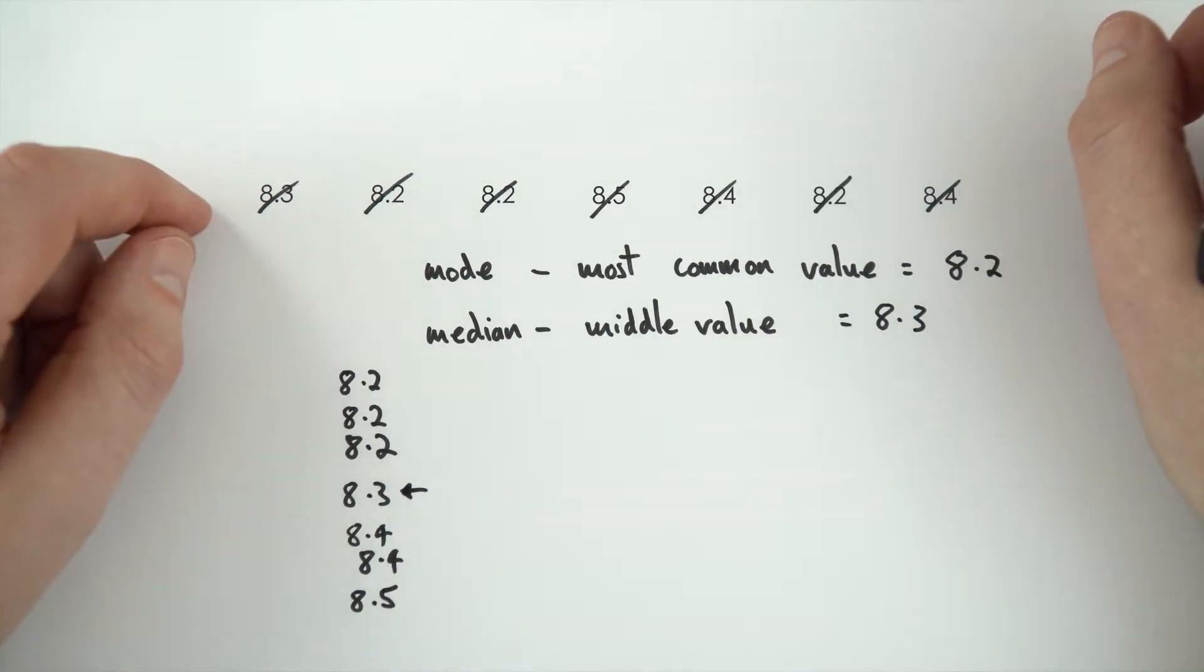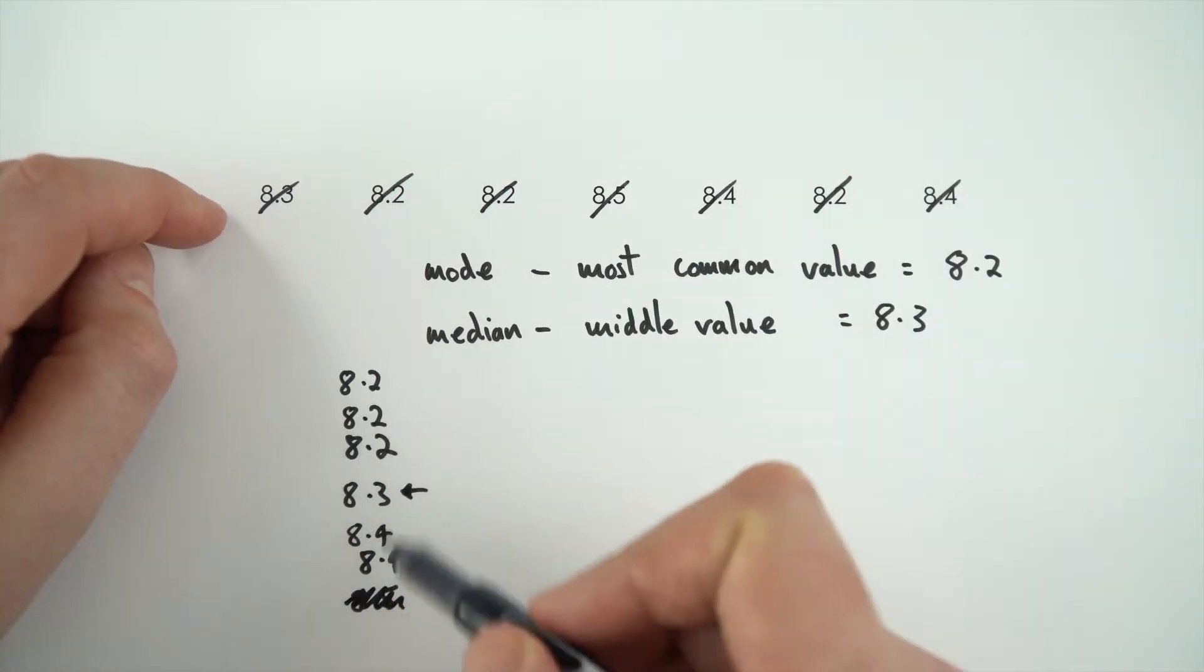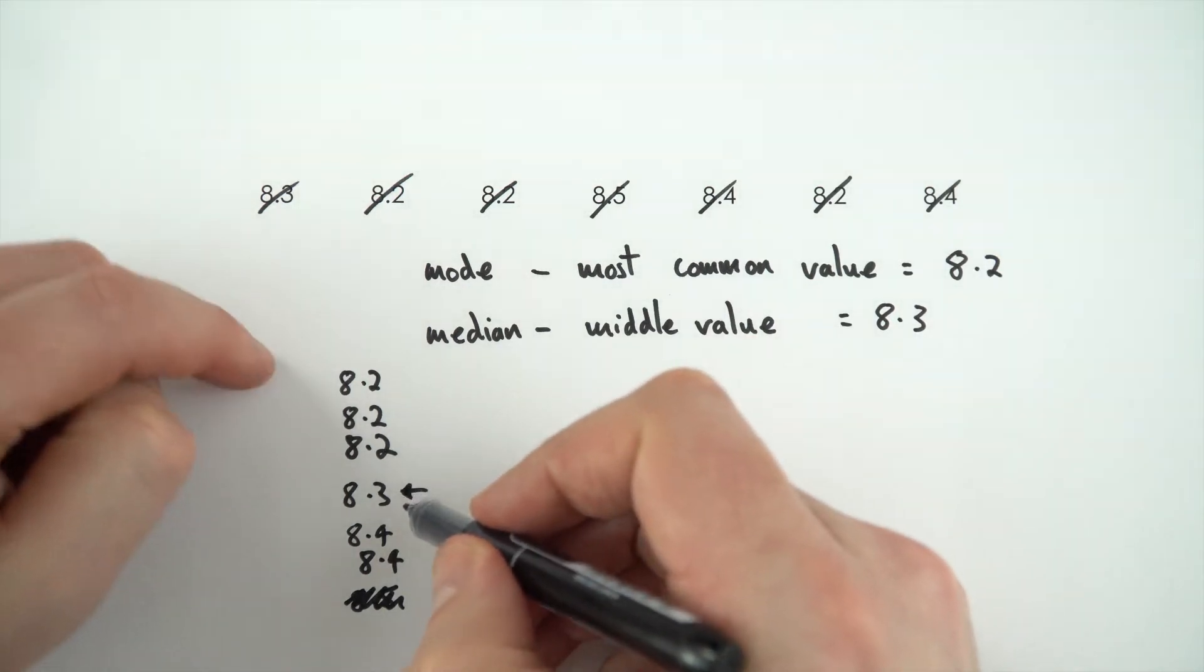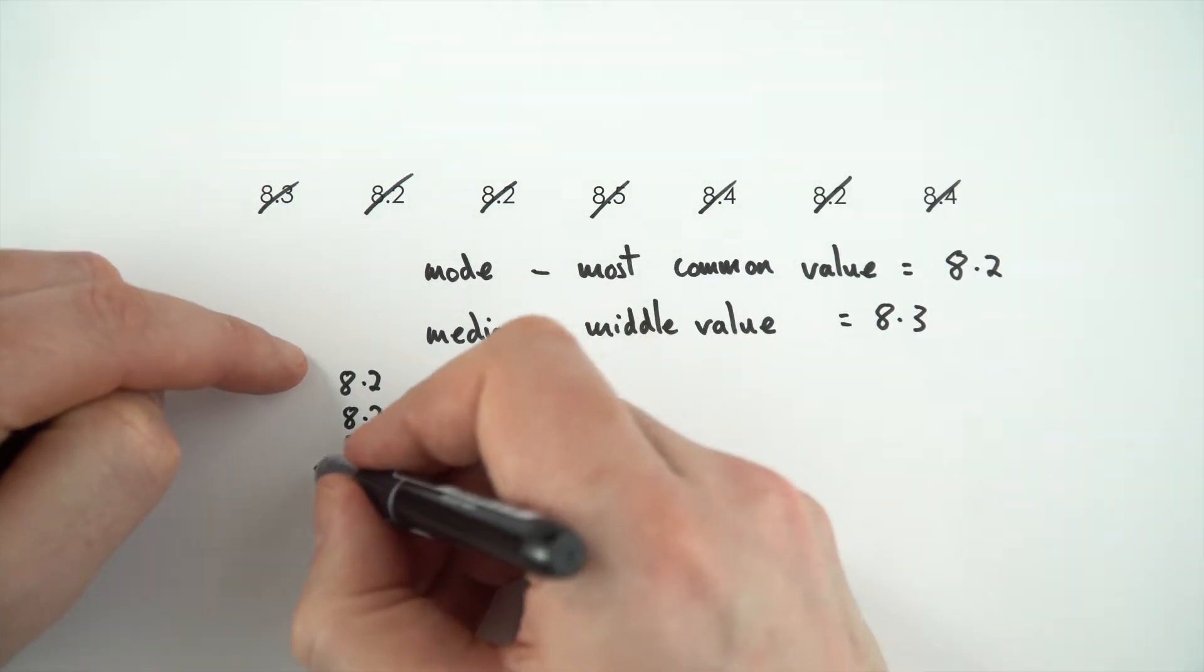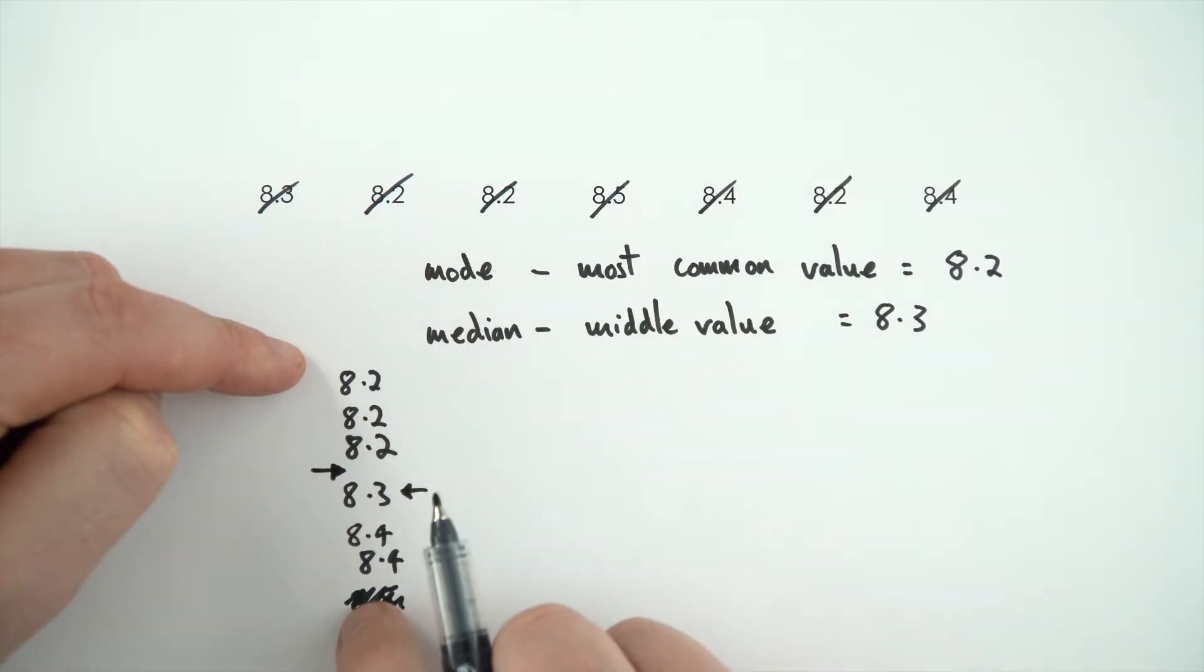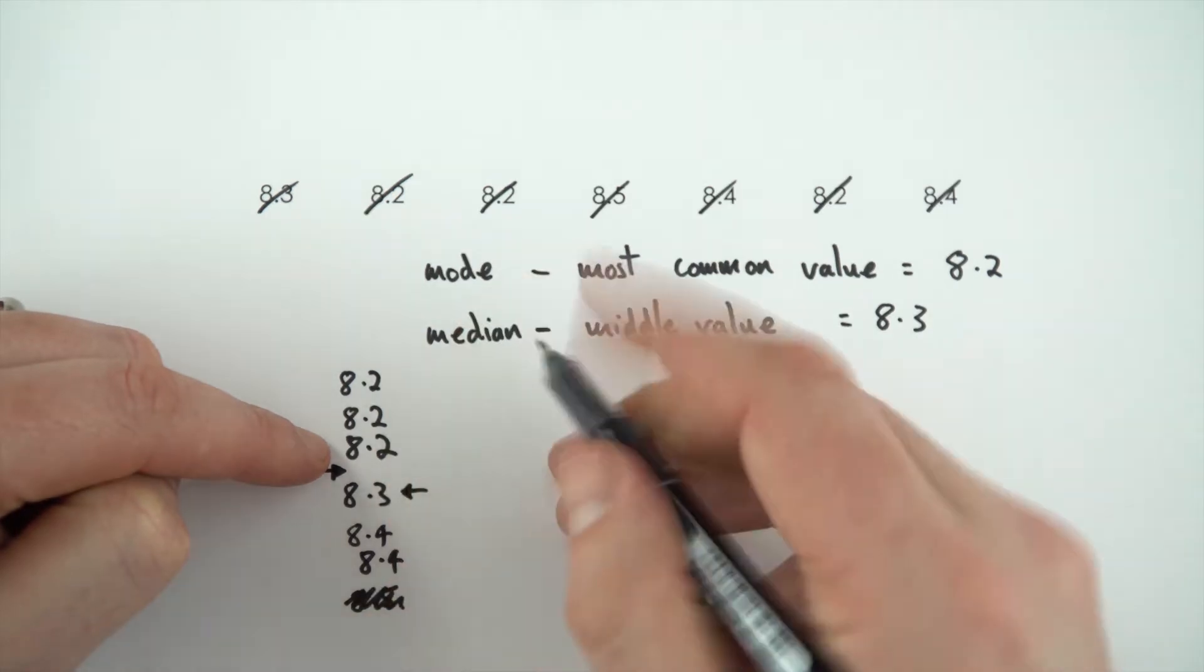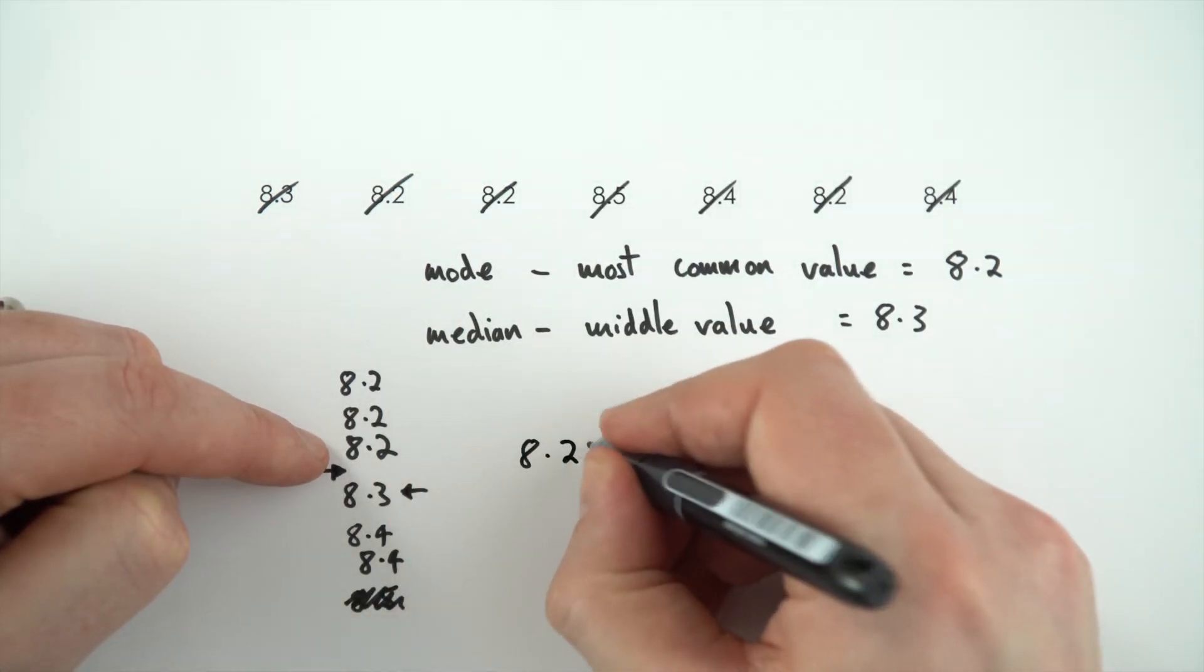The only final thing to say is if you had an even number of numbers, perhaps we had six numbers in the list. If you wanted to work out the middle value, it's going to be the mean of these two numbers here. So if you had six numbers in the list, the median would be the average of 8.2 and 8.3, which is 8.25.